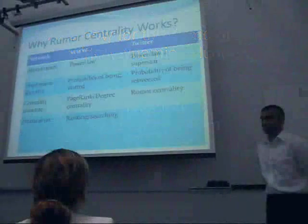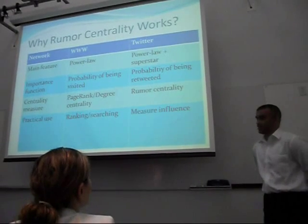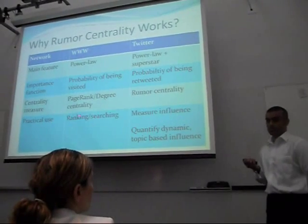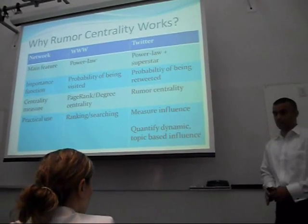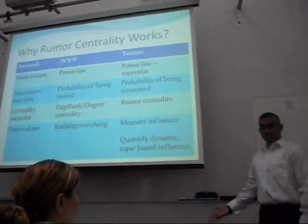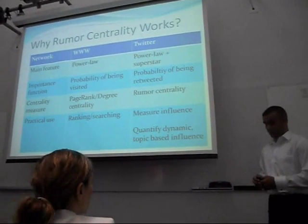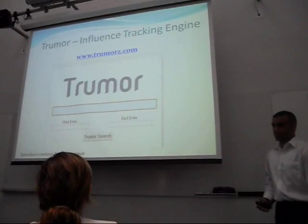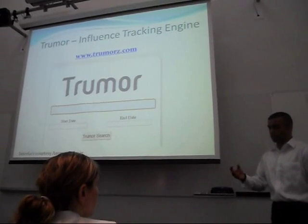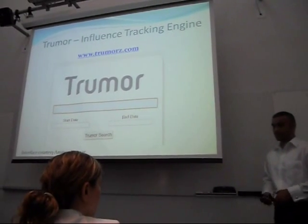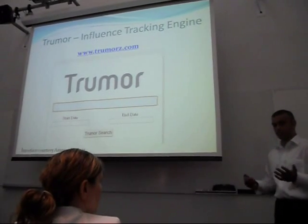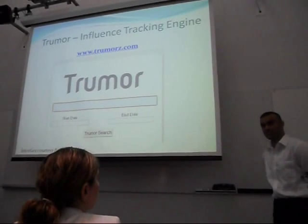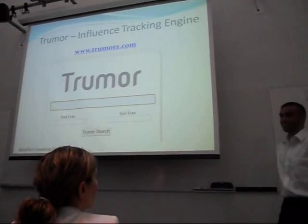So now we have our centrality measure for measuring influence. What we really want to do is quantify dynamic, topic-based influence, because these retweet networks are specific to topic and timing. Being engineers, we actually went ahead and built a system that can do this, and our system is called TrueRumor. The way TrueRumor works is we have a Twitter crawler crawling Twitter's public API, getting about 1% of the tweet log — not all of Twitter, but a decent amount. We currently have about 2.5 million tweets in our database. We built this interface for the engine, and I want to thank Ammar and Kalu who worked hard to get this interface working.